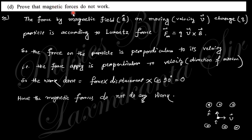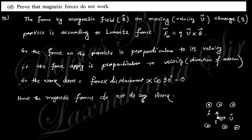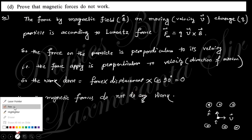The next question says: prove that magnetic force does no work. When a charged particle enters a magnetic field, it experiences a Lorentz force F = q(v × B). This force is perpendicular to both v and B — that is, perpendicular to the velocity (direction of motion) and therefore perpendicular to the displacement. Since force and displacement are perpendicular, the work done is F · ds = F·ds·cos90° = 0. Therefore, the magnetic force does no work.